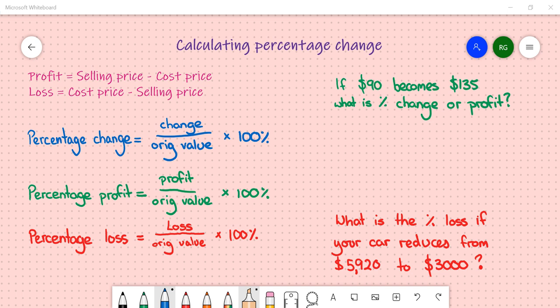Profit is determined by finding the selling price minus the cost price. So that should give you the difference. If you went to a shop and you bought something off the shelf, chances are they pay less than that price to get it. Therefore, the shop makes a profit.